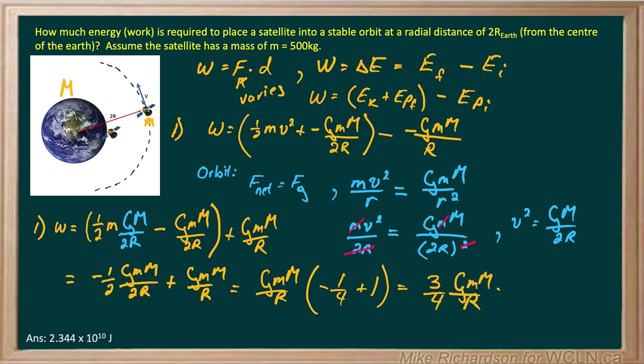And when you fill in all the values where you know the masses of the Earth and the satellite and the radius of the Earth, you should end up getting 2.344 times 10 to the 10 joules of work is necessary to take that satellite from the surface of the Earth to a stable orbit a distance 2R away.